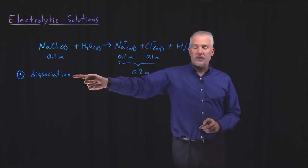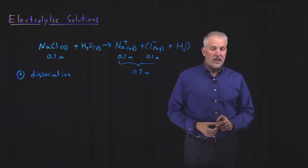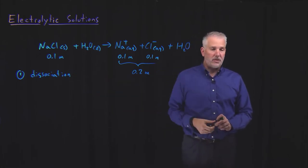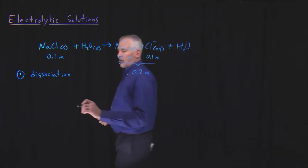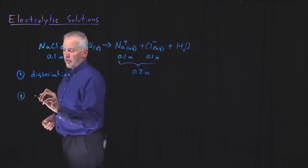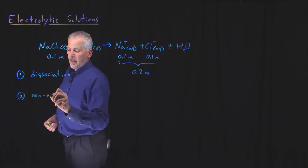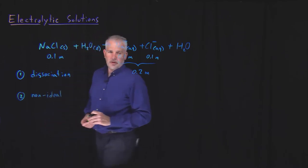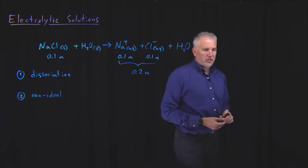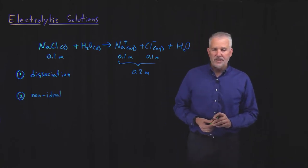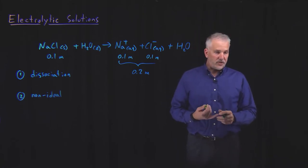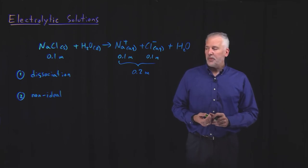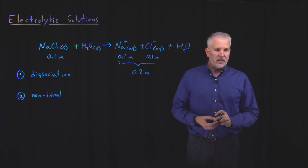So certainly important to consider the fact that the solute dissociates to calculate the concentration of these solutions. It's also very important to recognize that in electrolytic solutions, the solutions are almost never ideal. We can almost never get away with treating the solutions as an ideal solution, so we can't actually use many of the expressions that we've developed for colligative properties or for vapor pressure and so on.